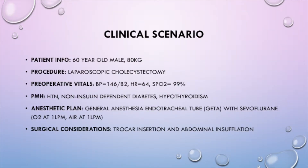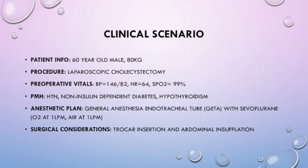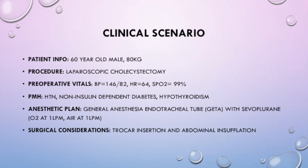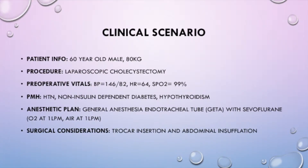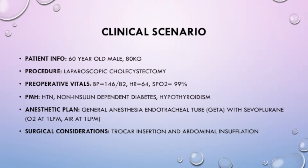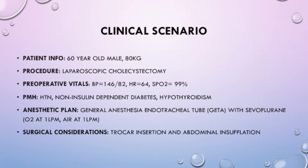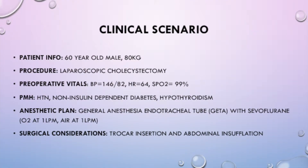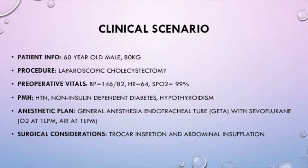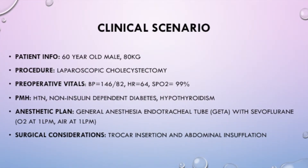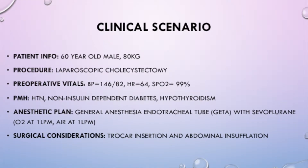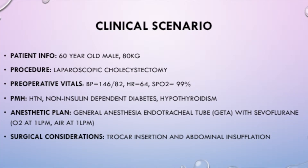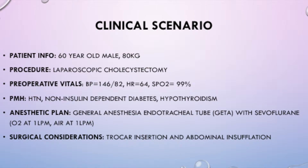The following scenario will be used to illustrate the proper recognition, decision-making, and prioritization during a VGE. Mr. Banks is a 60-year-old, 80-kilogram male undergoing a laparoscopic cholecystectomy. Preoperatively, his blood pressure was 146 over 82, heart rate 64, and oxygen saturation of 99% on room air. His past medical history includes hypertension, non-insulin-dependent diabetes, and hypothyroidism. After induction, the patient was intubated and placed on one MAC of sevoflurane on one liter of oxygen and one liter of air for maintenance of general anesthesia. Surgical timeout has been completed and the surgeon has placed the Veress needle and is ready to begin abdominal insufflation.